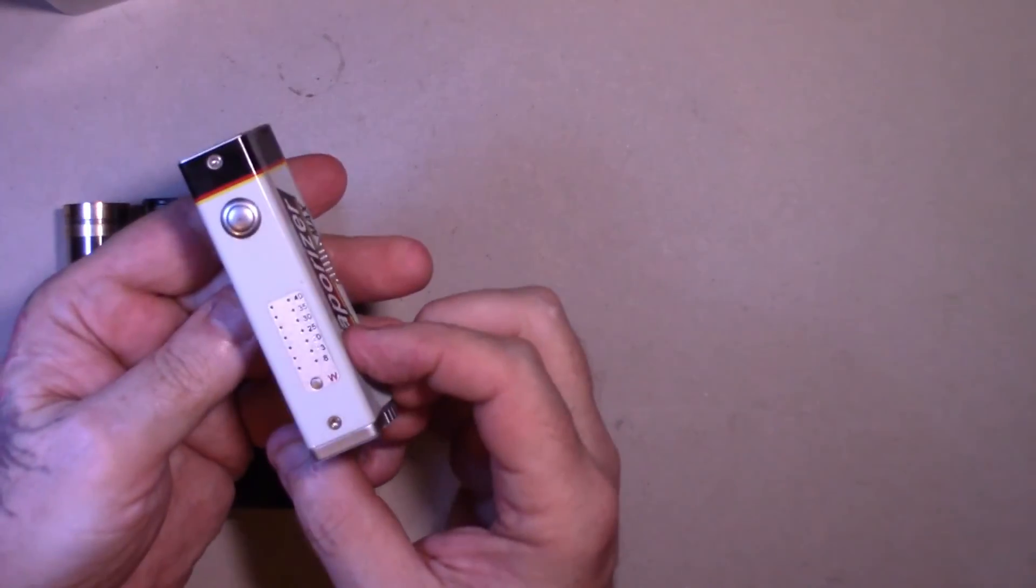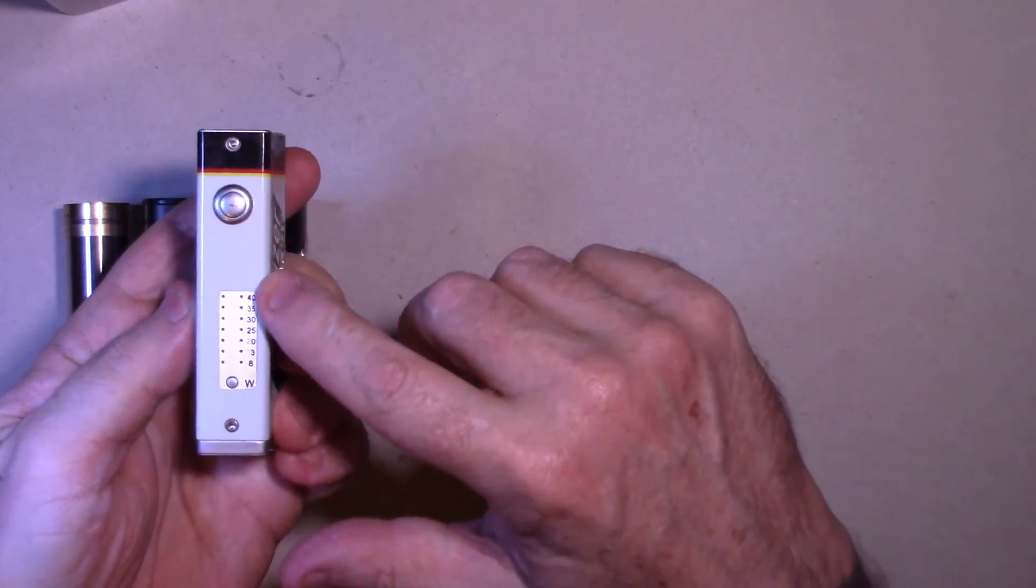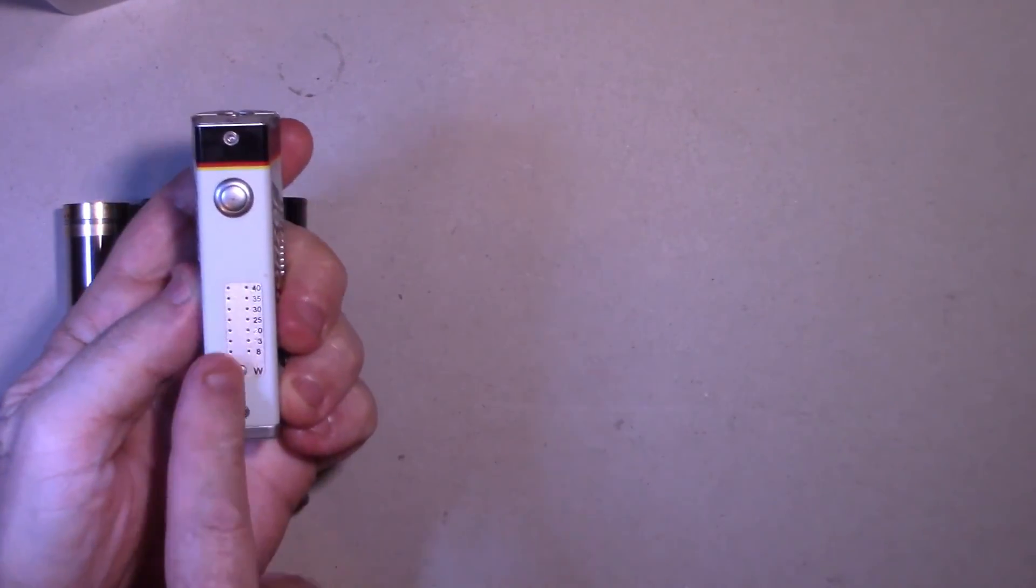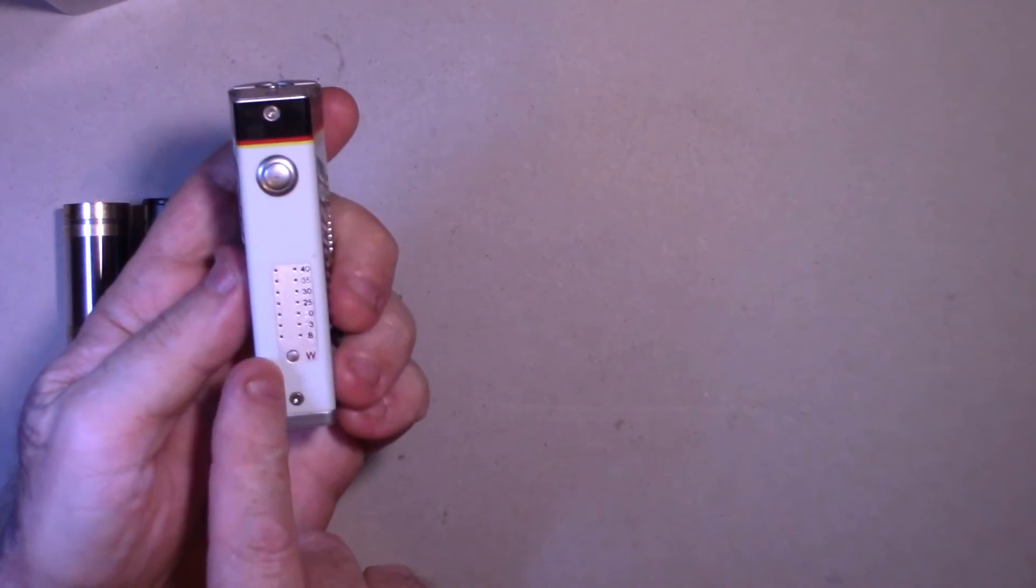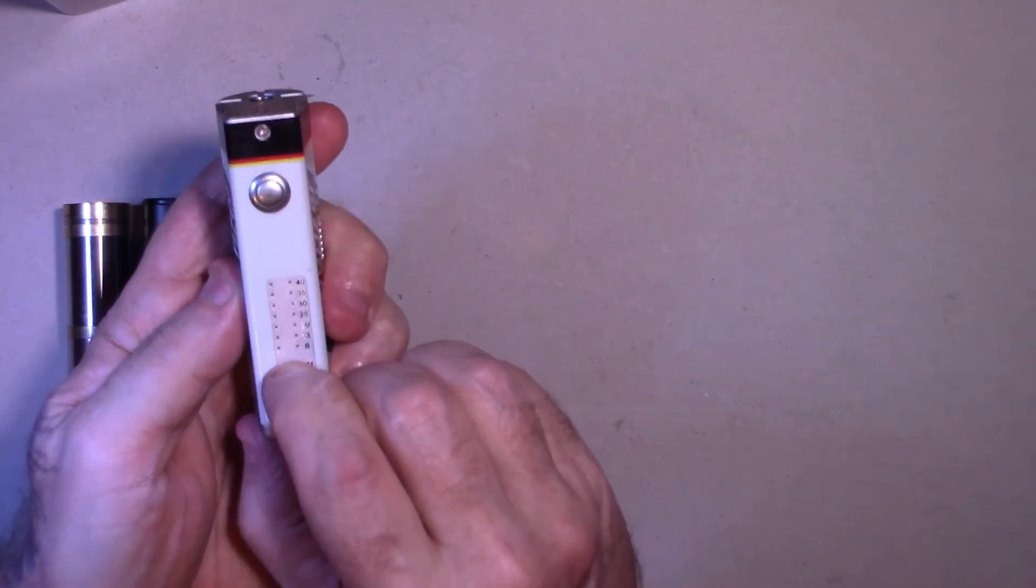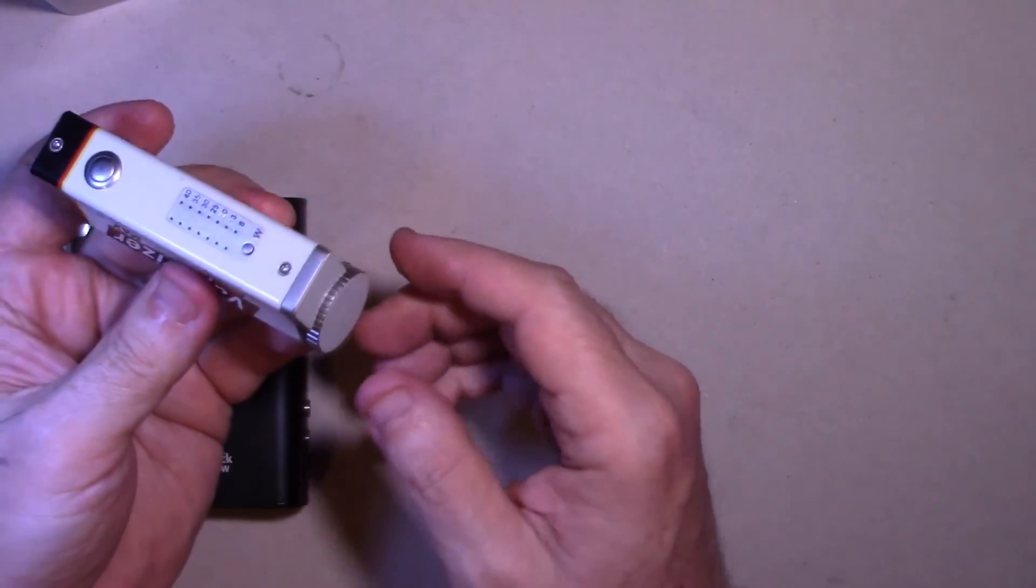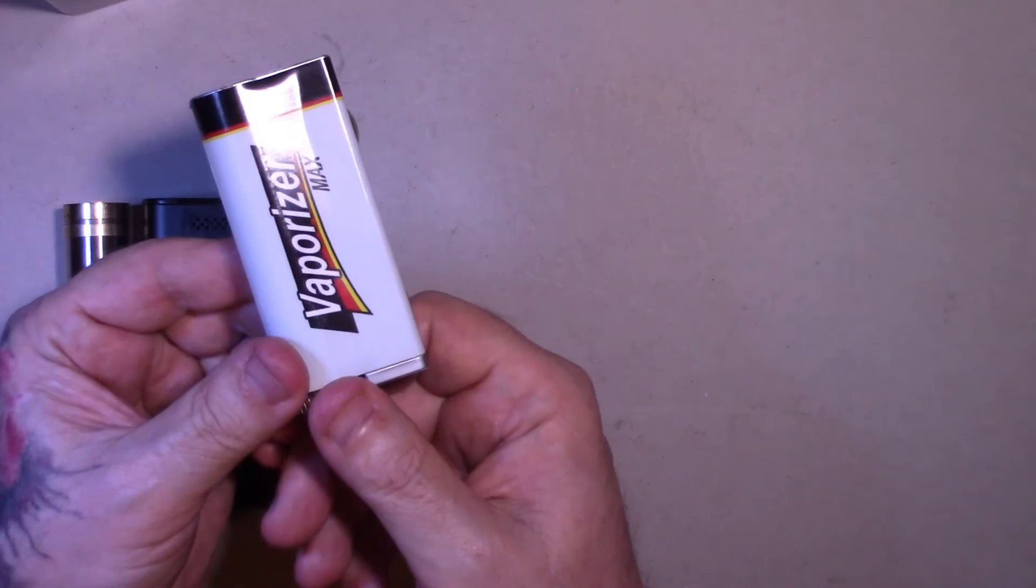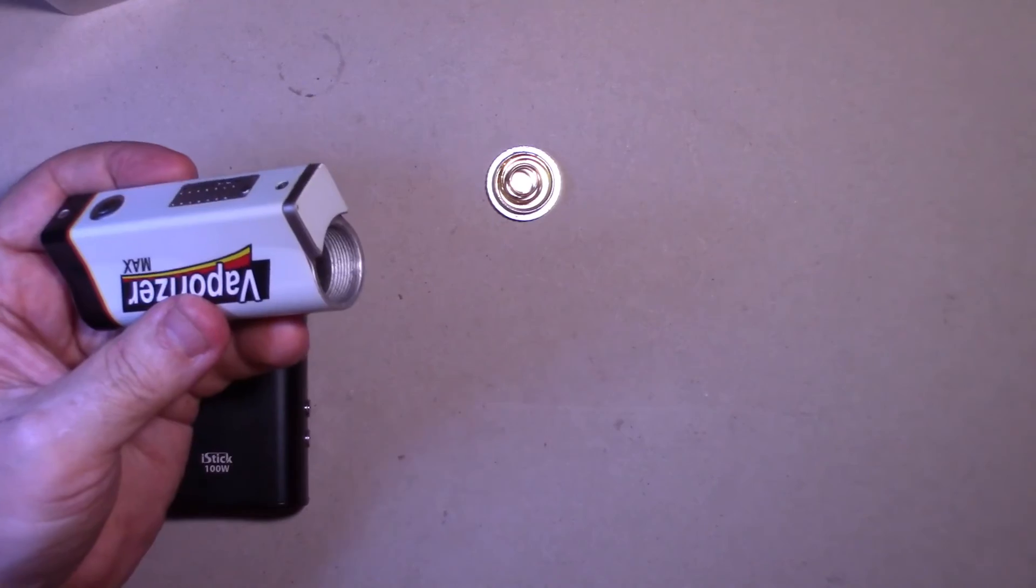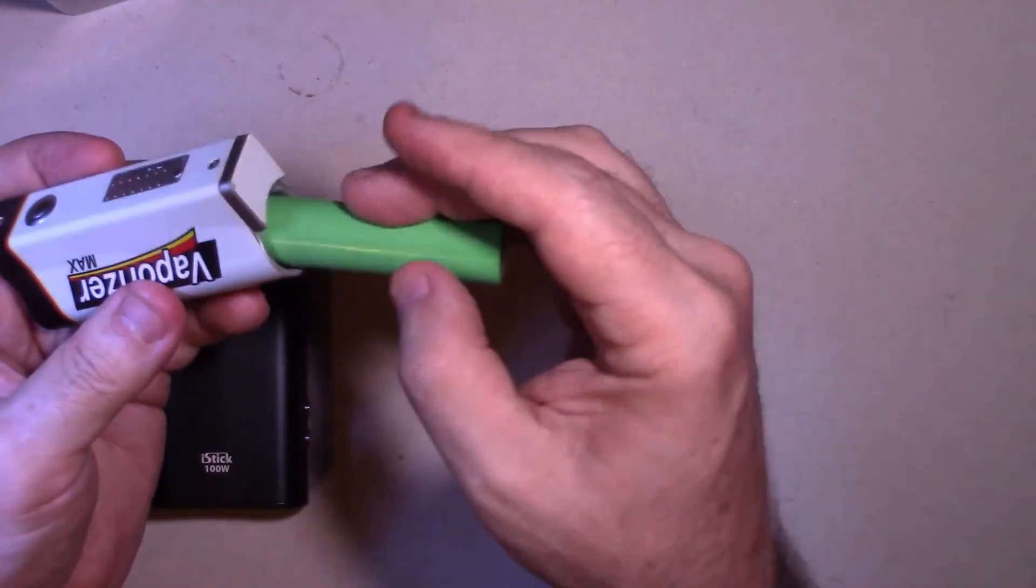This one is also a regulated mod. This one has the readout here of the wattage, the fire button, and this here when it lights up, it tells you the battery strength. Little clicker button here changes the wattage. The difference with this is when the battery starts to die, you unscrew the bottom and you simply put a new battery in.